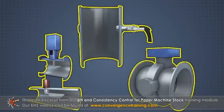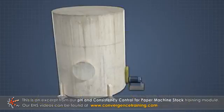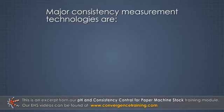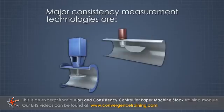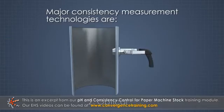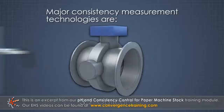There are three major technologies available to measure consistency. Inferred methods such as agitator motor load are also sometimes used. The major consistency measurement technologies are: 1. Shear force, 2. Optical, and 3. Microwave.